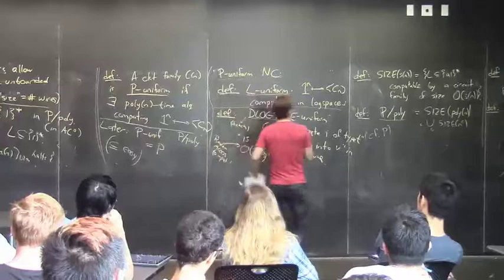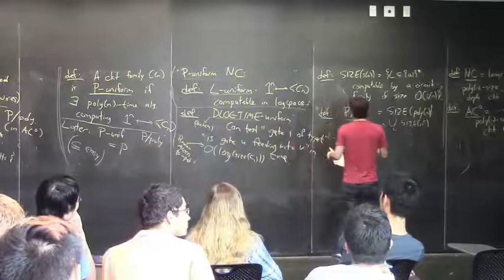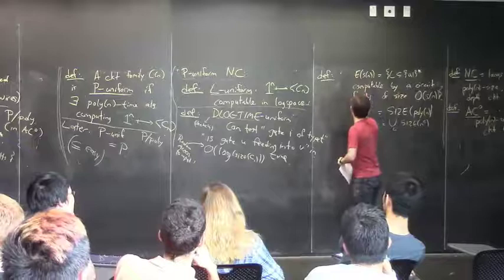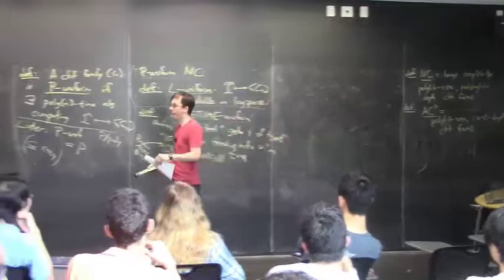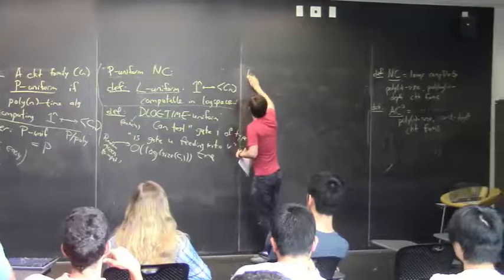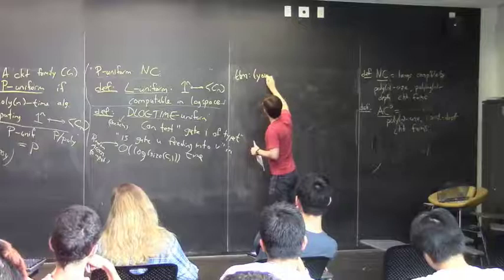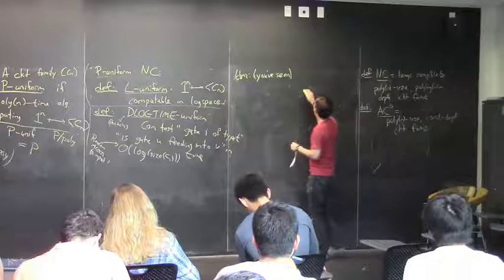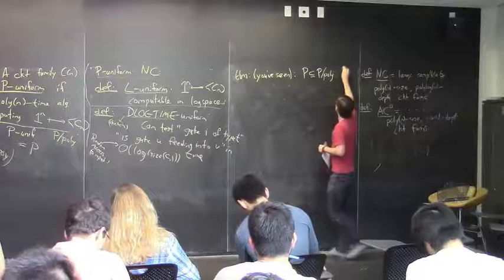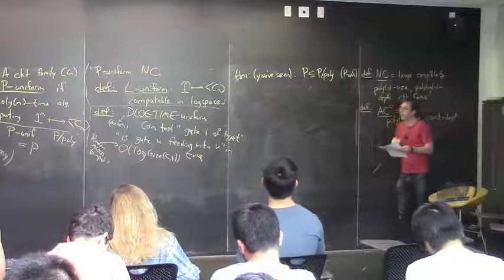Let's do the other direction: P is contained in P/poly, and not only that, but in a uniform way. If you have a Turing machine that decides some language in polynomial time, you can also build a polynomial-size circuit family — in fact, a nice uniform one — that also decides the same language.